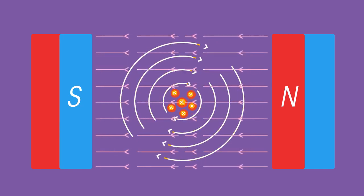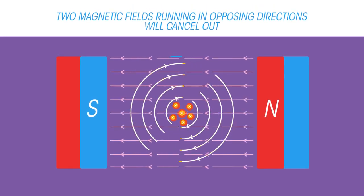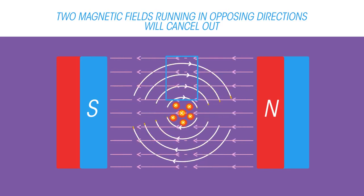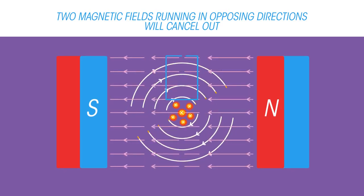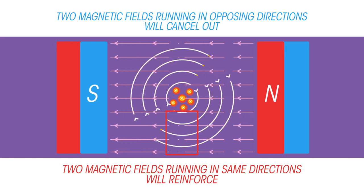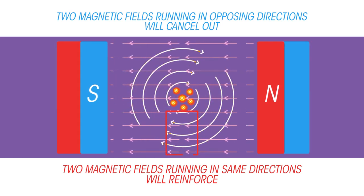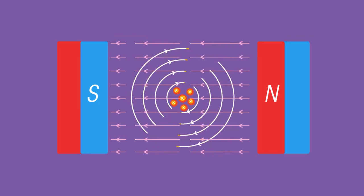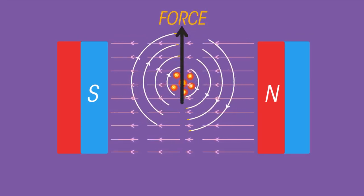These magnetic fields interact. Above the wire, these two fields run in opposite directions and so cancel each other out. Below the wire, the fields run in the same direction and reinforce each other. The wire is pushed away from the strong field towards the weak one.